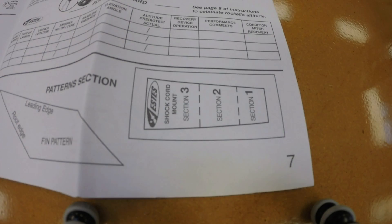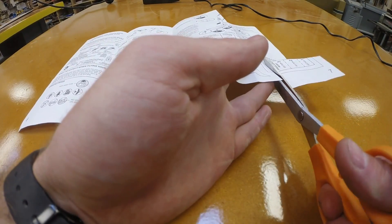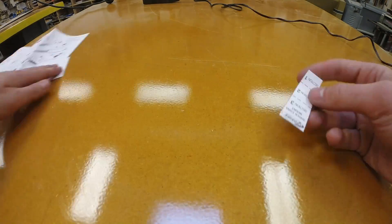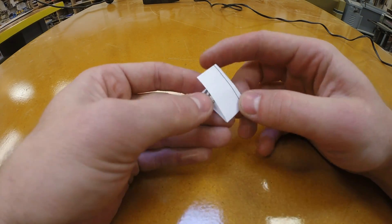On page seven of your instructions you'll find the pattern for the shock cord mount. You're going to actually use some scissors and cut out this outline. Next, fold the pattern along the dotted lines so that it's in three different sections just like this.